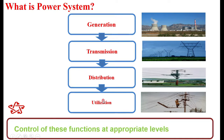The main focus of power system analysis is to coordinate all generation, transmission, and distribution so that the load can be met in the most economic way, the most reliable way, and with quality power supply. That is the main mantra of power system analysis — control of these functions at the appropriate level is very much essential for giving better electricity to the consumer.